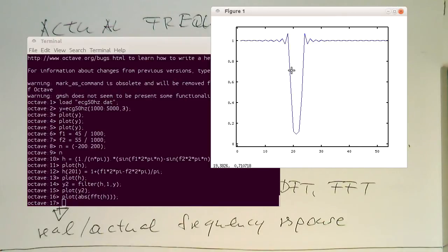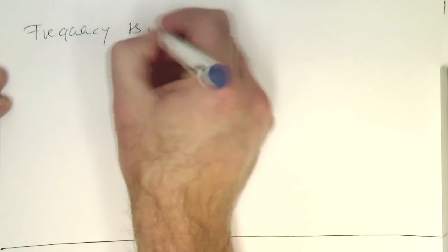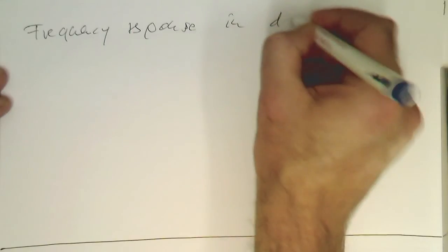Now we could also plot this frequency response in decibel. This gives us a better understanding of the filter. People usually would like to see this in logarithmic units. Frequency response in decibel.